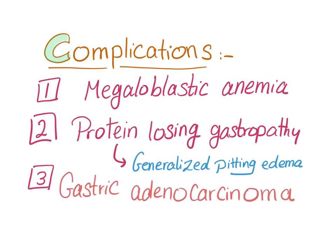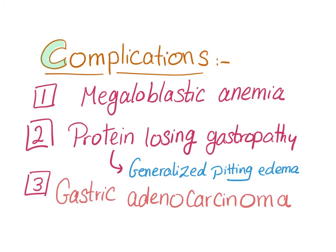The complications in Ménétrier's disease are: foveal hyperplasia creates an increased risk of gastric adenocarcinoma. There is also loss of vitamin B12 because it's not absorbed due to the absence of intrinsic factor, so on the long run there is megaloblastic anemia.